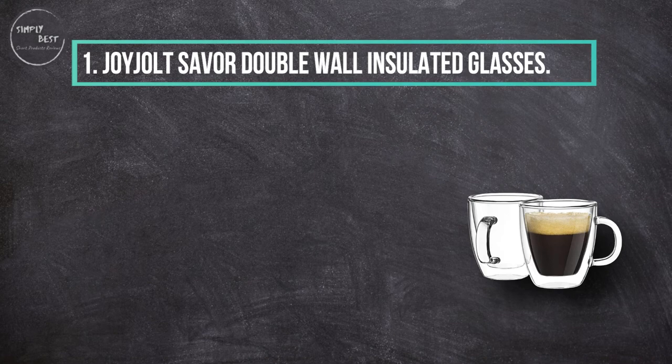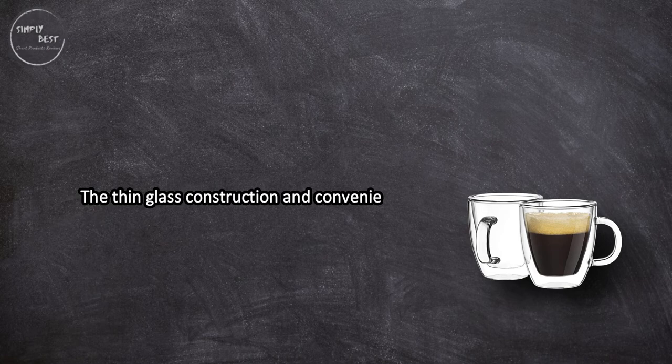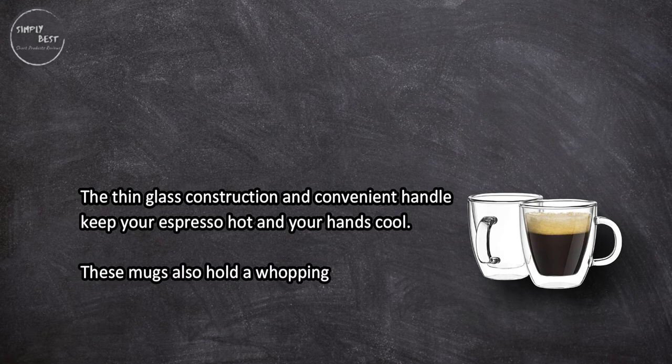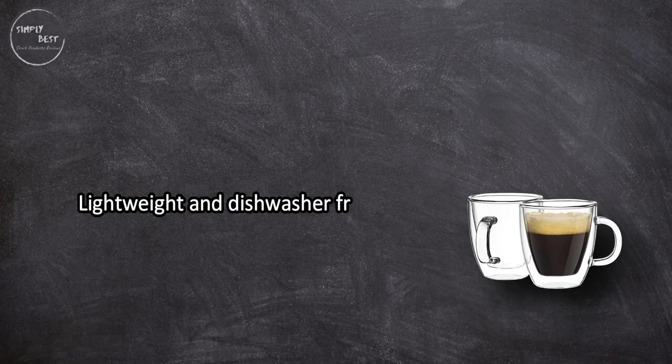At number one, JoyJolt Savor double wall insulated glasses. The thin glass construction and convenient handle keep your espresso hot and your hands cool. These mugs also hold a whopping five point four ounces of liquid.